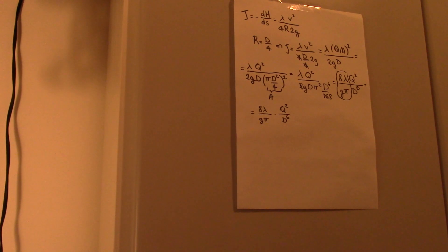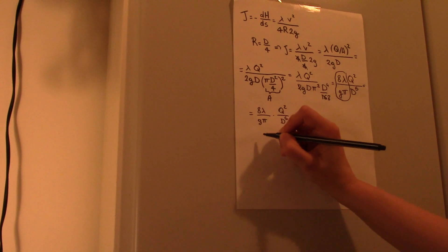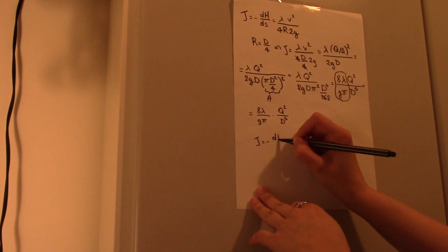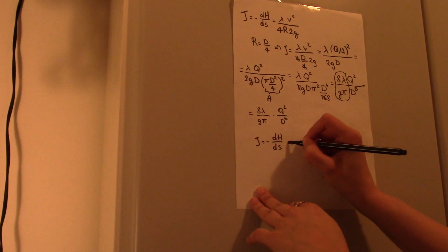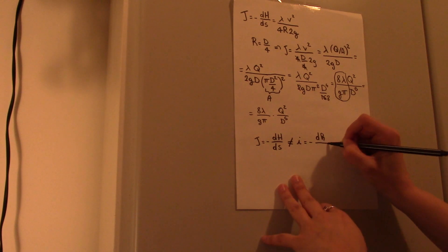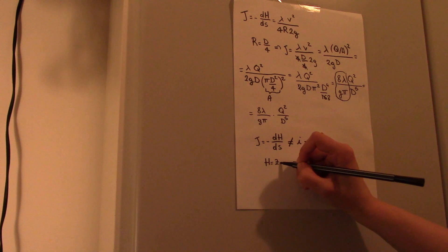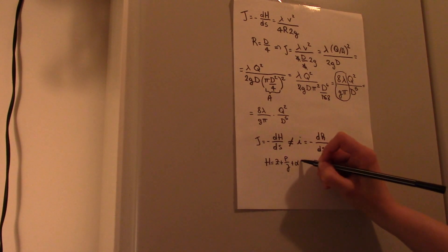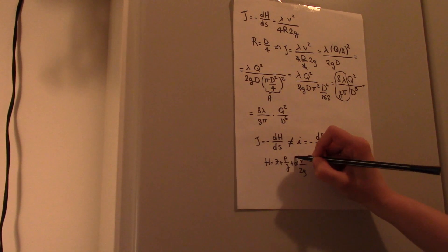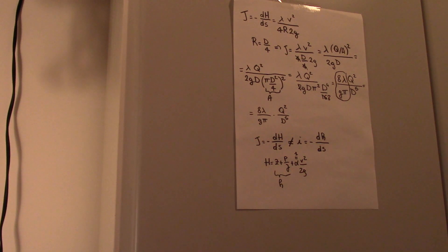An important thing to remember is that when considering permanent motion, J — the hydraulic gradient — is not equal to the piezometric gradient. J equals minus Δh over Δs, where h is the total head: z + p/γ + α·V²/2g, with α usually equal to 1 for turbulent flow. The piezometric gradient E equals minus Δ(little h) over Δs, where little h equals z + p/γ is the piezometric head.